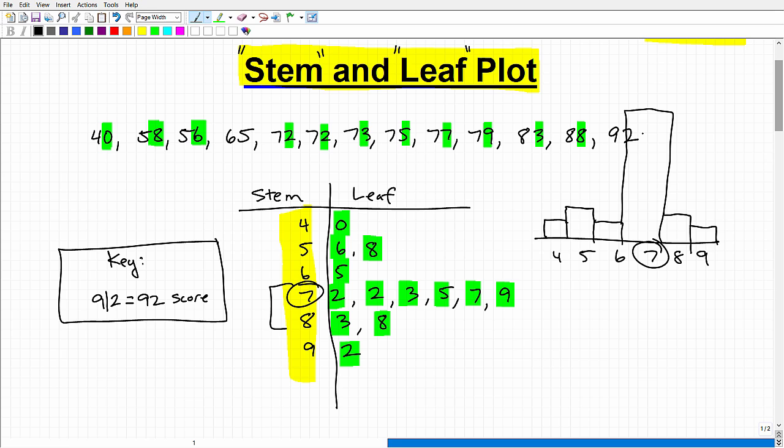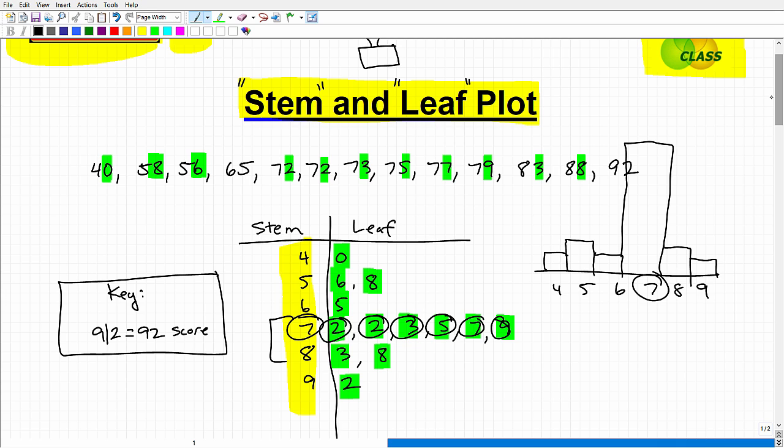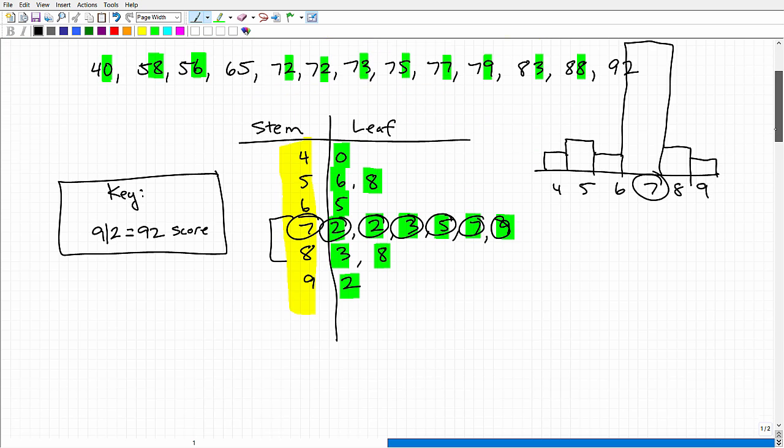And you would not have, the thing about the histogram, it shows the distribution pretty good. It shows a lot in the 70s, here. So you're like, okay, a lot of people scored in the 70s. But with a histogram or a bar chart, it doesn't give me the specific grades. I don't see the actual specific grades. Where a stem and leaf plot, I could see the specific data going on in that particular stem. That's the advantage of the stem and leaf plot.